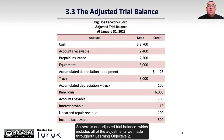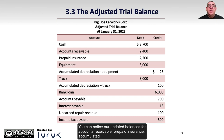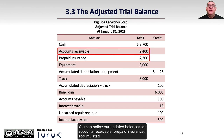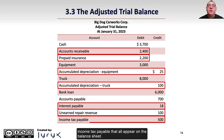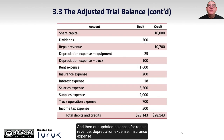Here's our adjusted trial balance, which includes all of the adjustments we made through our Learning Objective 2. You can notice our updated balances for accounts receivable, prepaid insurance, accumulated depreciation of both equipment and the truck, interest payable, unearned repair revenue, and income tax payable, that all appear on the balance sheet.